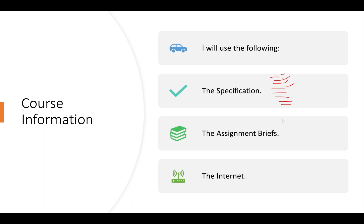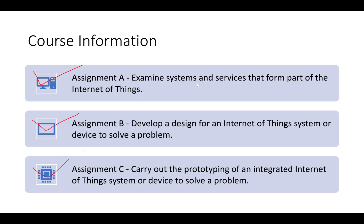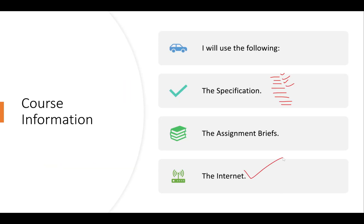The assignment brief is what the client gives you. It's normally along the lines of: you're part of a small engineering company that wants to do a particular thing. They want you to research for Assignment A, design for Assignment B, and develop a prototype for Assignment C. Keep in mind 'prototype' doesn't mean a perfectly working system — it's a real-world working example of what you intend the system to do. I'll also share my search criteria and word document covering individual sections you need to work through.